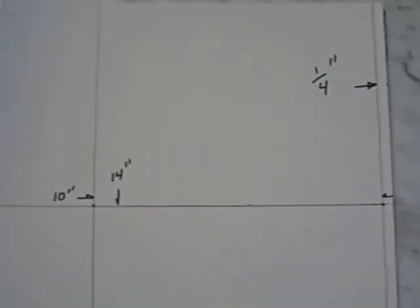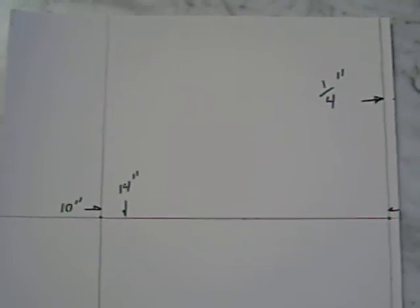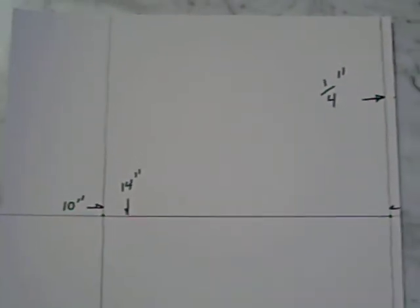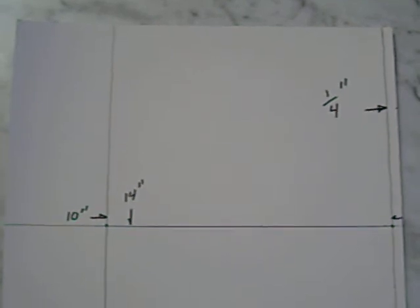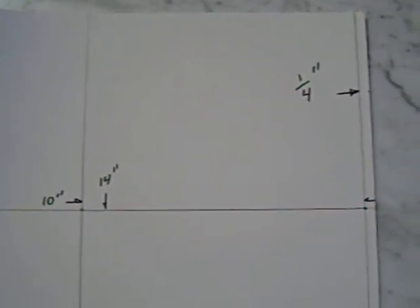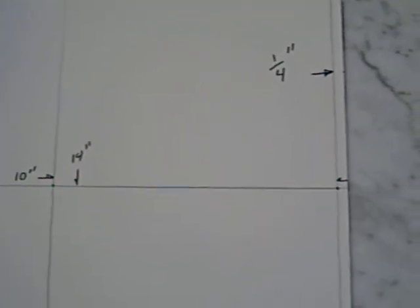So once you have a really good square, just like you see here. Ten inches by fourteen from a quarter of an inch edge, like this.